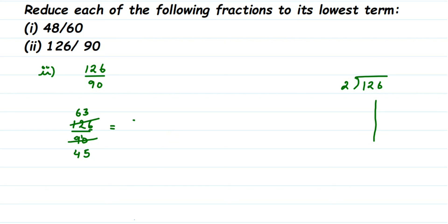Both 45 and 63 appear in the 9 times table. 9 × 5 = 45 and 9 × 7 = 63. So cancel both by 9 to get 7 and 5. Since 7 and 5 are prime numbers, we cannot cancel further. Therefore 7/5 is the lowest form of 126/90. This cancellation method is quite easy and commonly used in higher classes.